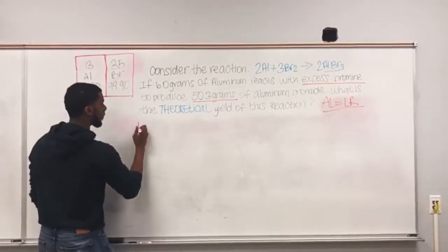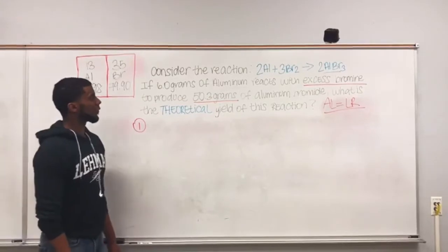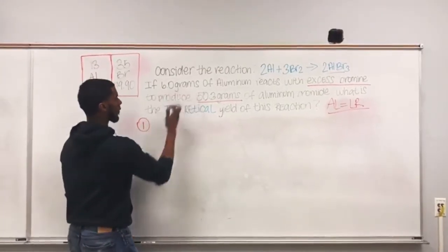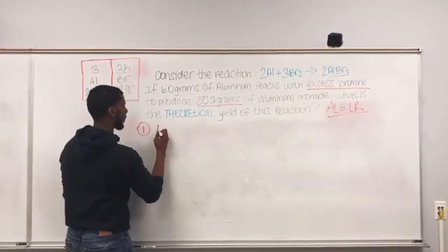To find the theoretical yield, we need to find the moles of Al. The first step is to take the grams given and multiply by the ratio of moles to grams.